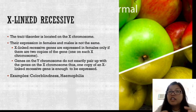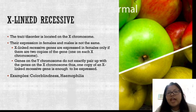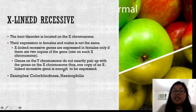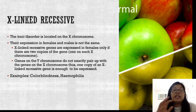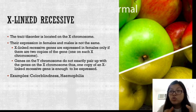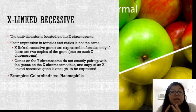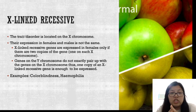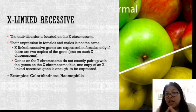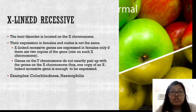For X-linked recessive, these are traits or disorders located in the X chromosomes. The expression of X-linked recessive traits differs in females and males. Females have two X chromosomes while males have only one X chromosome; the other is Y. For X-linked recessive traits in females, both X chromosomes need to carry that trait or disorder before it is expressed. If only one X carries it, it will not be expressed because it will be masked by the other normal X chromosome.